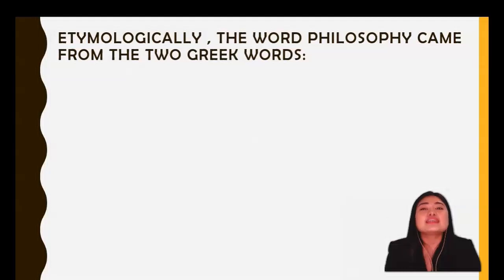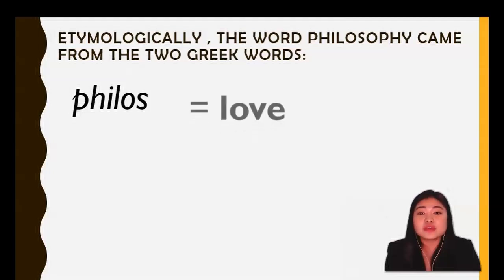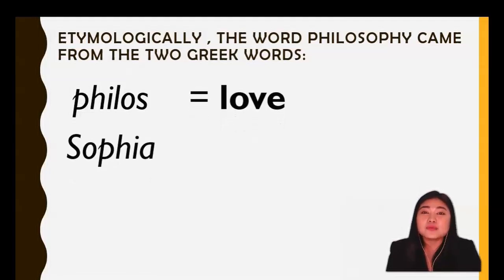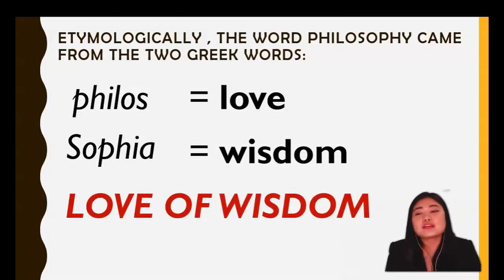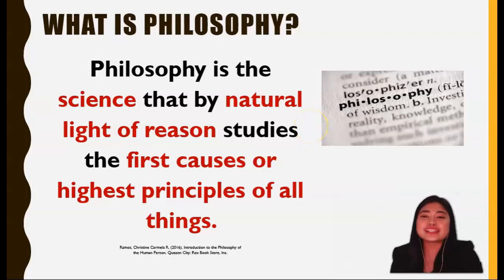Etymologically, the word philosophy came from two Greek words: philos, which means love, and sophia, which means wisdom. Therefore, philosophy is the love of wisdom, and gaining wisdom is the ultimate goal of philosophy. Philosophy is the science that by natural light of reason studies the first causes or highest principles of all things.